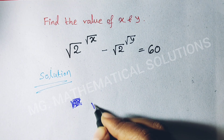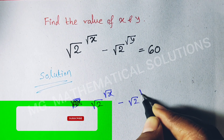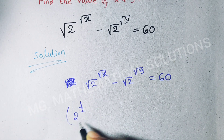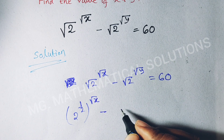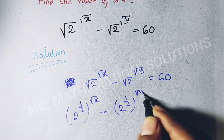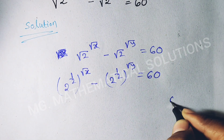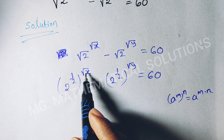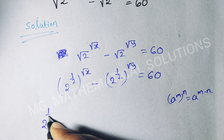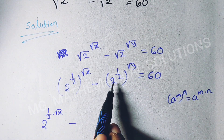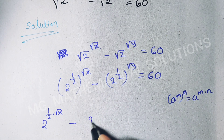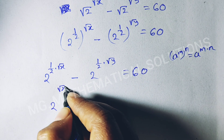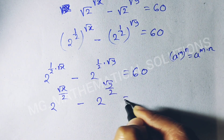We rewrite this equation: root 2 to the power root x minus root 2 to the power root y equal to 60. Root 2 we can write as 2 to the power half, whole to the power root x, minus 2 to the power half, whole to the power root y, equal to 60. Now we use the formula a to the power m, whole to the power n, equal to a to the power m times n. Here a means 2, m means half, and n means root x. So 2 to the power half times root x minus 2 to the power half times root y equal to 60. So, 2 to the power root x over 2 minus 2 to the power root y over 2 equal to 60.